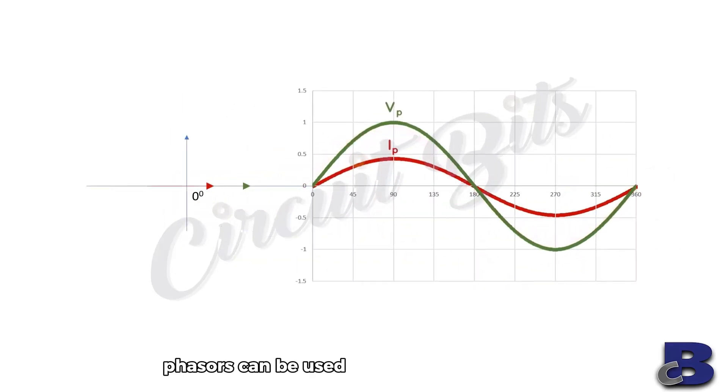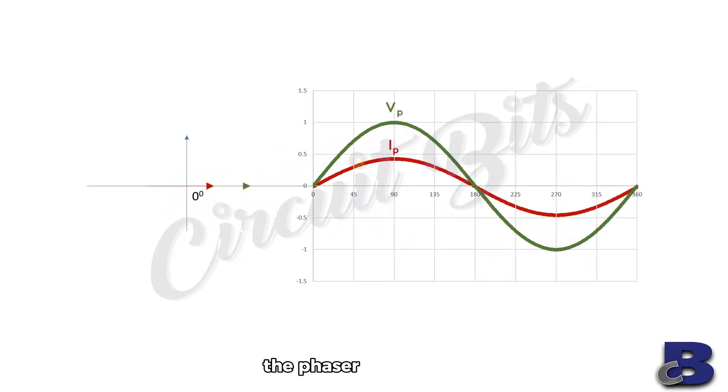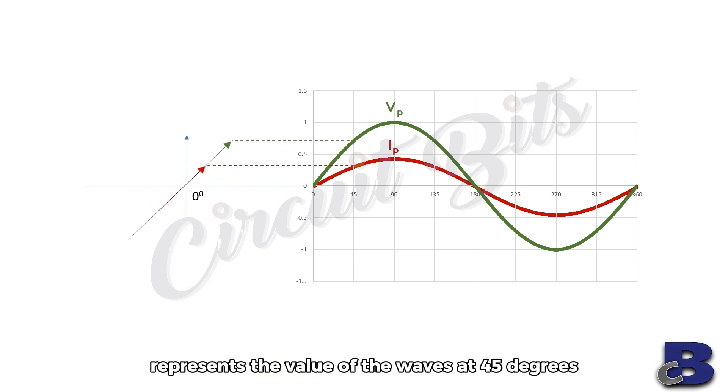phasors can be used to represent phase shift. The phasor in this case represents the value of both waves at zero degrees, and if rotated by 45 degrees, represents the value of the waves at 45 degrees.